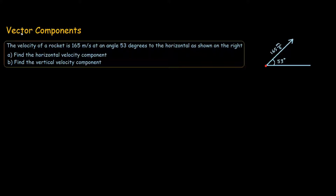We have a vector component problem where the velocity of a rocket is 165 meters per second at an angle of 53 degrees to the horizontal. Part 1 of the problem asks us to find the horizontal velocity component of the rocket.